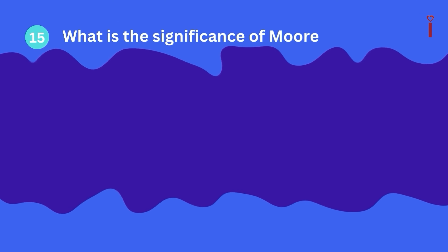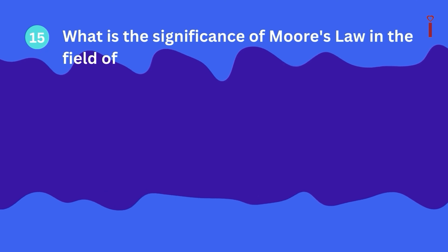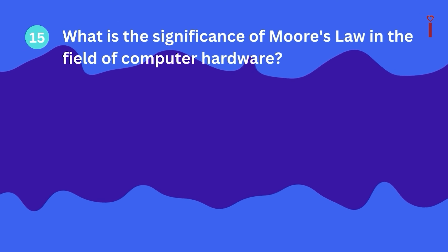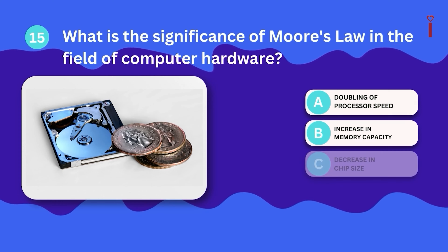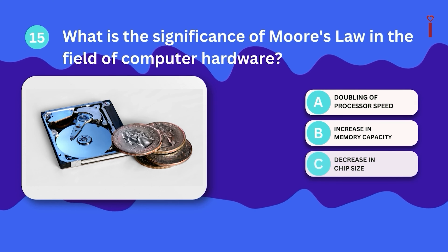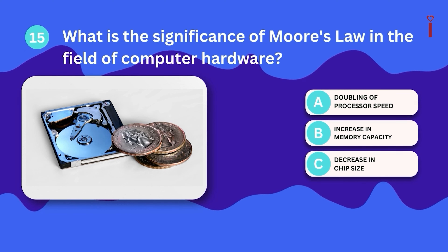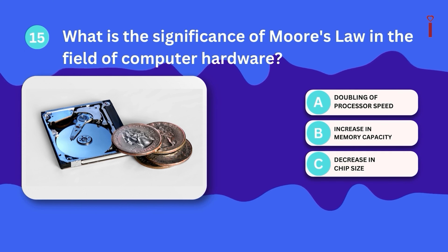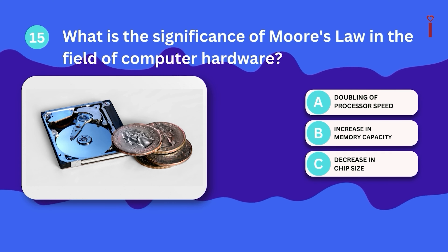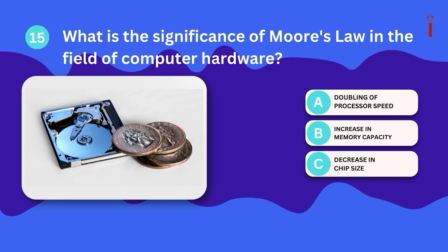Question 15: What is the significance of Moore's law in the field of computer hardware? A. Doubling of processor speed, B. Increase in memory capacity, C. Decrease in chip size?